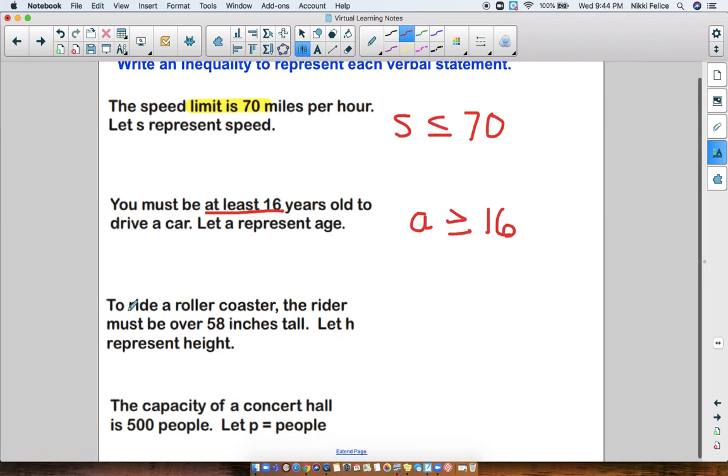The third one, to ride a roller coaster, the rider must be over 58 inches tall. We're going to let H represent height. 58 is my magic number. If you have to be over 58, that means you have to be greater than 58 inches. So H has to be greater than 58.